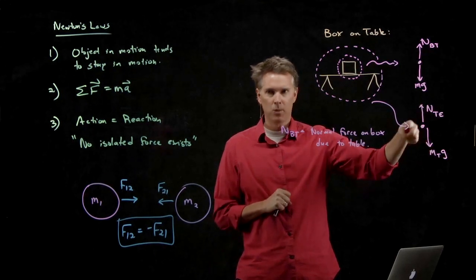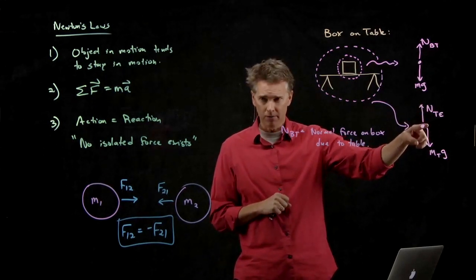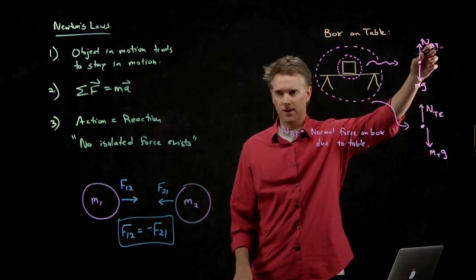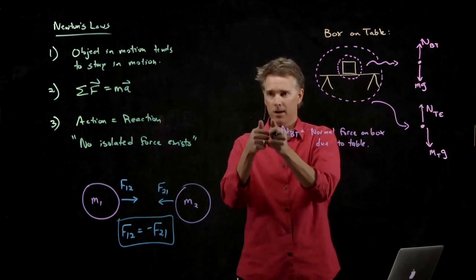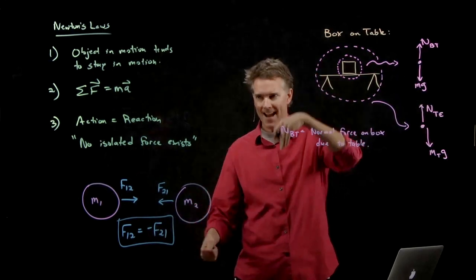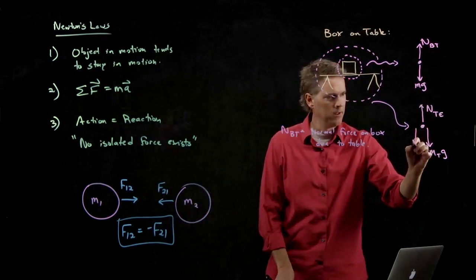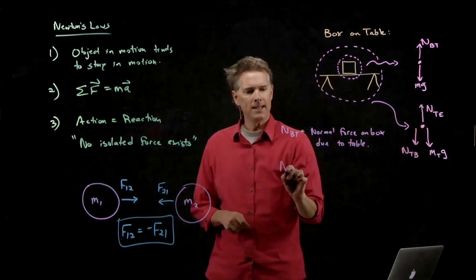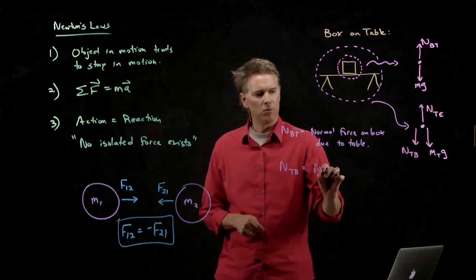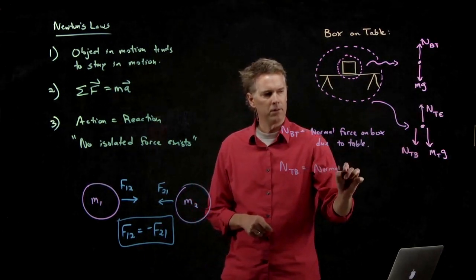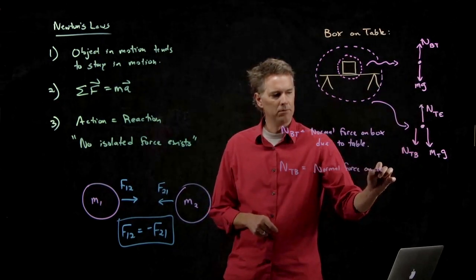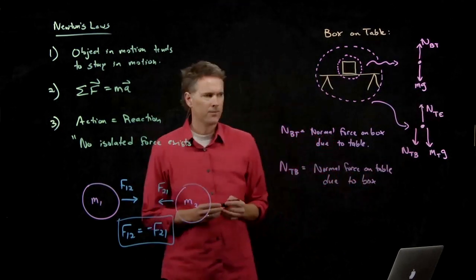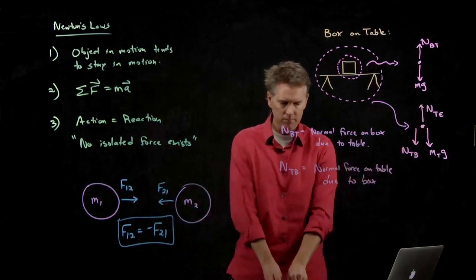So I don't want to draw mg where that would be the mass of the box times gravity, but you said something else there, which is this normal force. Yeah. As the table is pushing up on the box, the box is pushing down on the table. How hard is it pushing down? It is N-T-B. So N-T-B is normal force on table due to box. That's what we need right there.